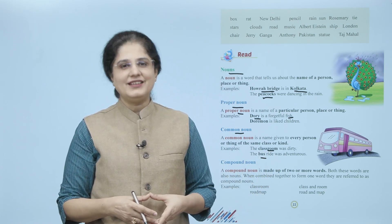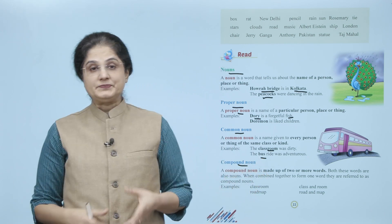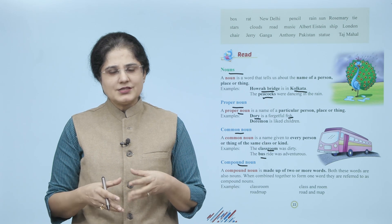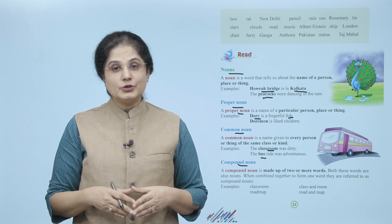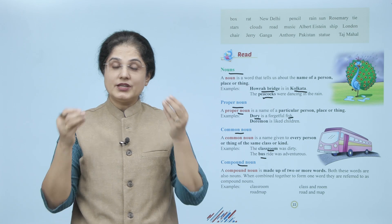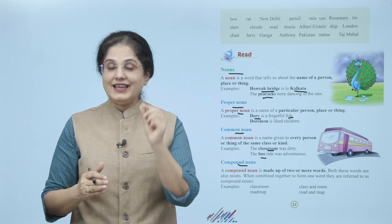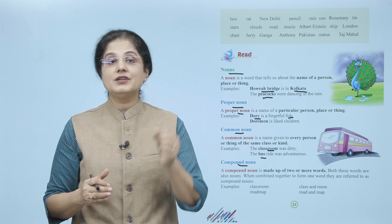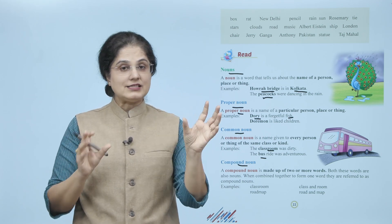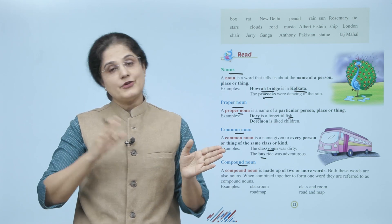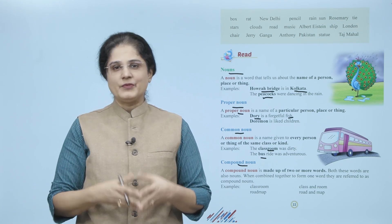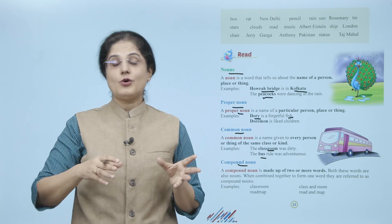Now let us look at the compound noun. A compound noun is made up of two or more words, and both these words are also nouns. So when combined together to form one word, they are referred to as compound nouns. For example, classroom — agar hum dekhe to yeh do words hain: class bhi noun hai, room bhi noun hai, aur jab hamneh joda aapas mein to hamaara compound noun ban gaya — classroom. Aur kya example hain? Jaise ki road map — to road aur map.